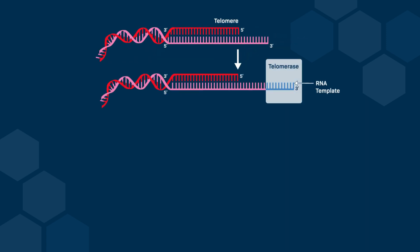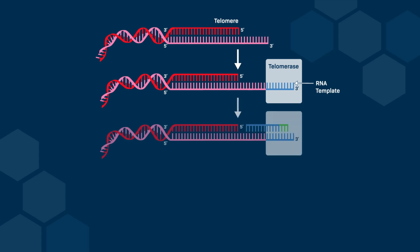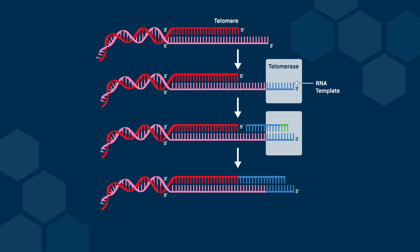Telomerase is an RNA-protein complex that binds to the repetitive sequences at the ends of chromosomes known as telomeres. The RNA component of telomerase serves as a template for adding additional telomere sequences to the 3' end of the lagging strand template. This extends the template strand, which allows DNA polymerase to complete replication without losing genetic material. In this way, telomerase ensures that the ends of chromosomes are fully replicated, which prevents the progressive shortening of chromosomes after each cell division and maintains genomic integrity.